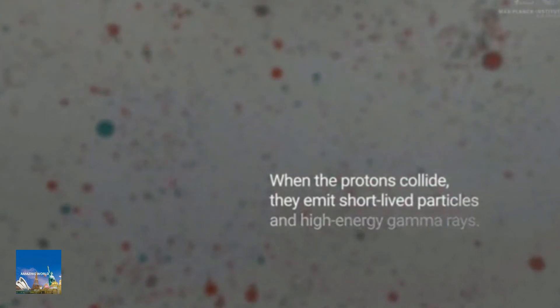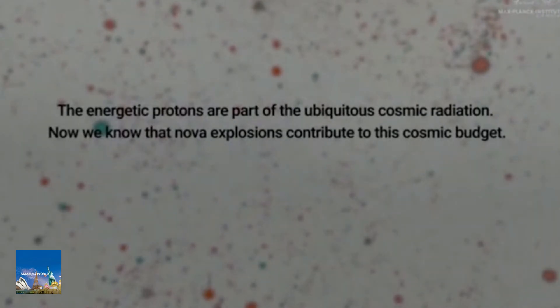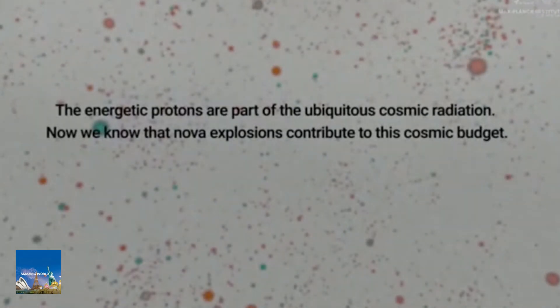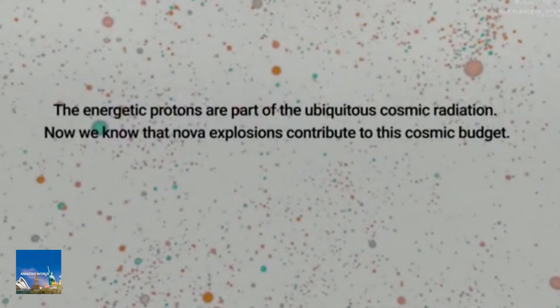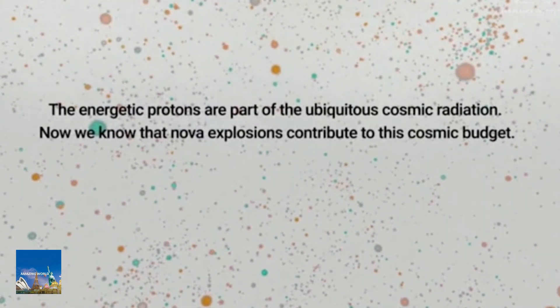After the explosion, several shock fronts propagated through the stellar wind from the red giant and the interstellar medium surrounding the binary system. These shock waves work like a giant power plant in which particles are accelerated to near the speed of light.